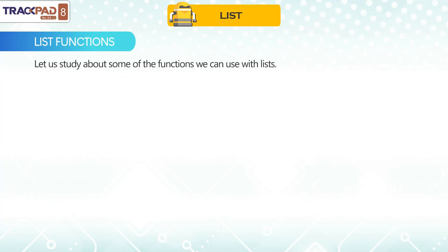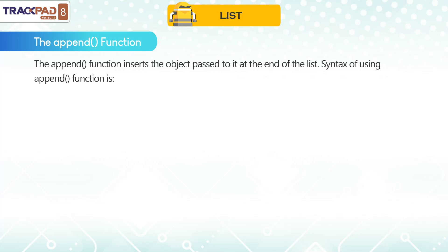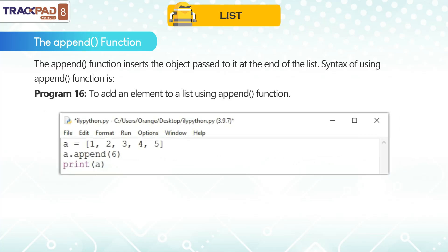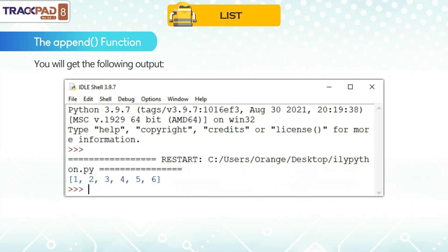List Functions. Let us study about some of the functions we can use with lists. The append() function inserts the object passed to it at the end of the list. The syntax of using the append() function is shown in Program 16: To add an element to a list using the append() function, you will get the following output.